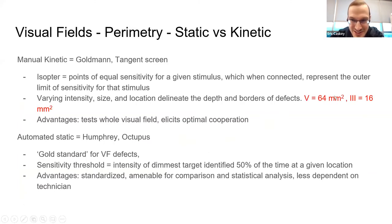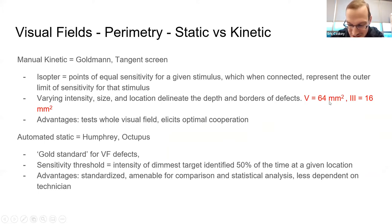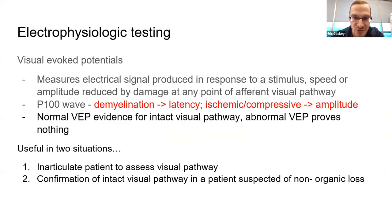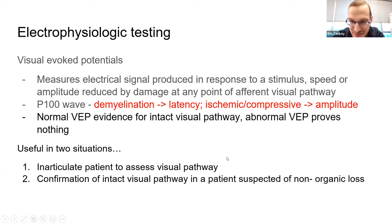Remember the Goldman visual field stimulus sizes. The size 5 is 64 square millimeters; we usually use size 3, which is 16 square millimeters. Use your rule of four from there. You won't interpret visual evoked potentials, but know that prolonged latency indicates demyelination, while reduced amplitude is more associated with ischemic or compressive optic neuropathies.